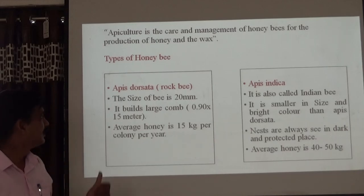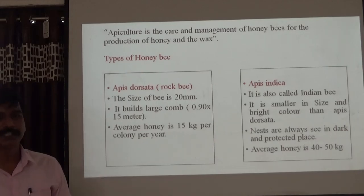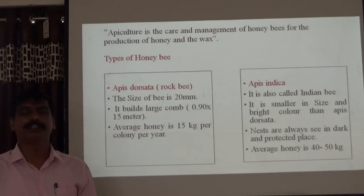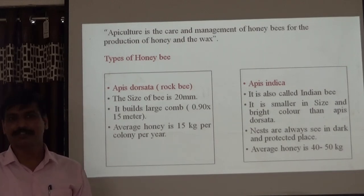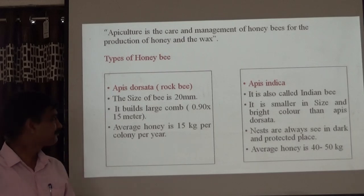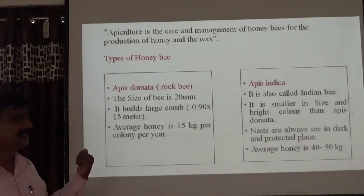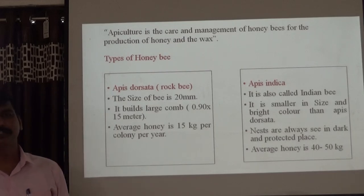Types of honey bee — there are four types: Apis dorsata, Apis mellifera, Apis indica, and Apis florea.